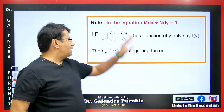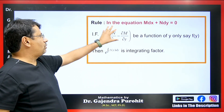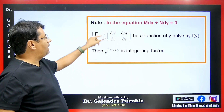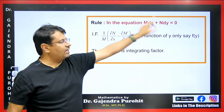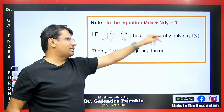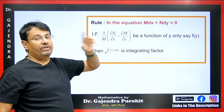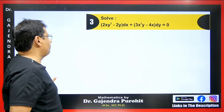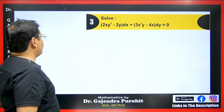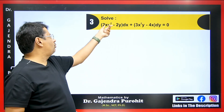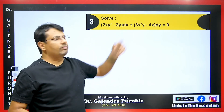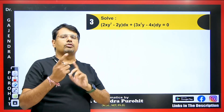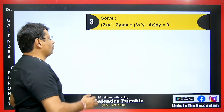Now I will explain the second concept: if M is the smaller term, then (∂N/∂x − ∂M/∂y)/M should be a function of y. The integrating factor in that case is e to the power of the integration of f(y) dy. For example, consider this next question where there are two terms on each side — you have to check which formula applies.